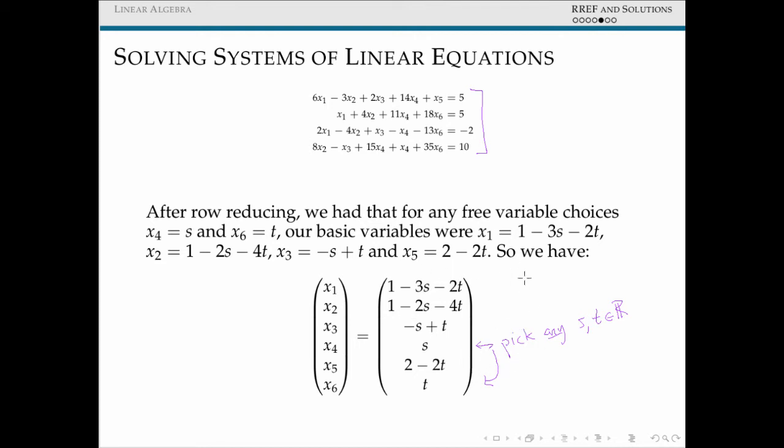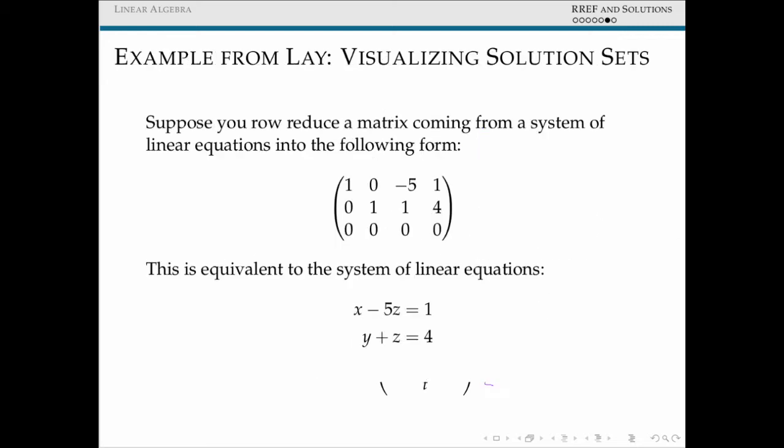So something that's worth noting is the number of free variables in our system exactly tells you what the dimension of your solution set will look like. So let's actually examine this for a slightly smaller system so we can actually visualize this. So let's say we started with some matrix and its row-reduced echelon form looks like this.